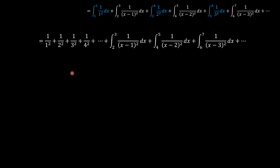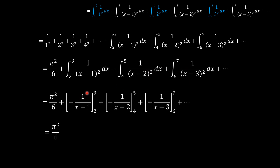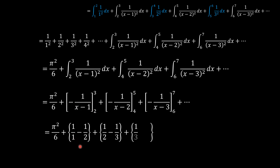The first summation — 1 over 1 squared plus 1 over 2 squared plus 1 over 3 squared plus ... — is the Basel problem, which equals pi squared over 6. Integrating the variable parts gives negative 1 over (x minus 1) evaluated on [2,3], and so on. Evaluating these produces 1 over 1 minus 1 over 2, then 1 over 2 minus 1 over 3, forming a telescoping series where successive terms cancel, leaving only 1. Therefore our integral equals pi squared over 6 plus 1.